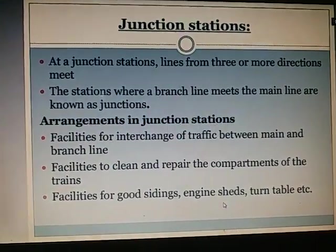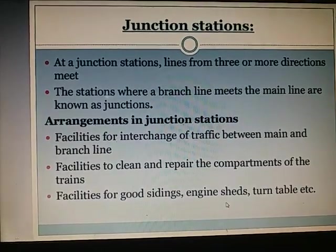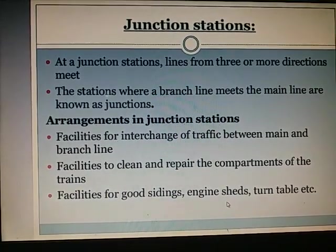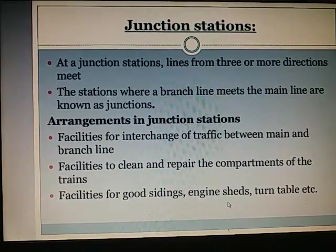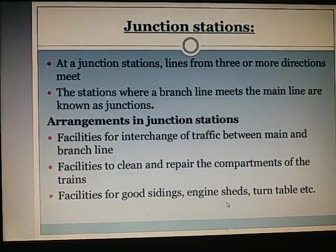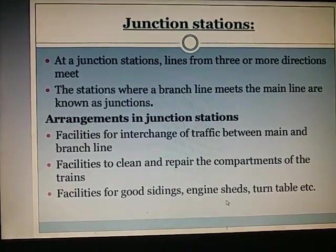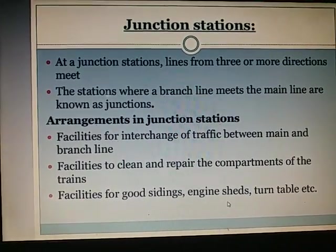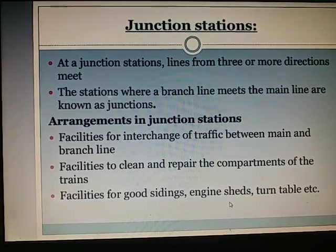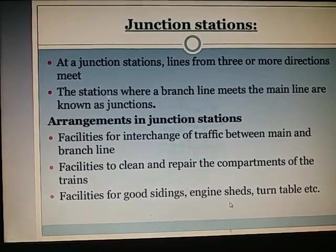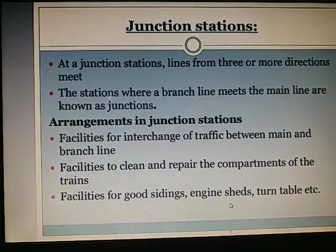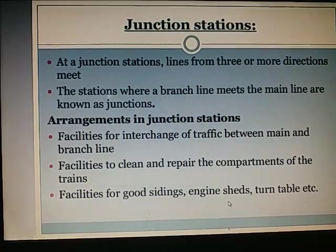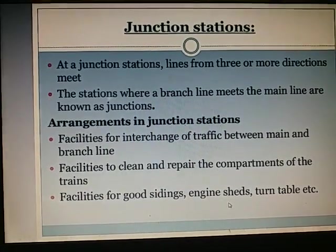Junction station: At a junction station, lines from 3 or more directions meet. These stations where a branch line meets the main line are called junctions. Arrangements in a junction station include facilities for interchange of traffic between the main line and branch line, and facilities to clean and repair the compartments of the train.